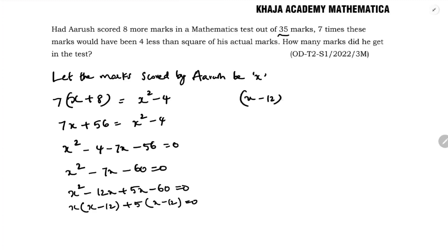So x minus 12 equals 0 or x plus 5 equals 0. Therefore x equals 12 or x equals -5. They didn't mention anything about negative marking, so he got 12 marks in his test. The answer is 12 marks.